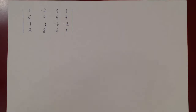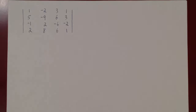The idea is to get some zeros in this matrix. The more zeros we have, the fewer cofactors we have to find. We can use row operations or column operations, whichever gives us the easiest way of getting zeros in the matrix.